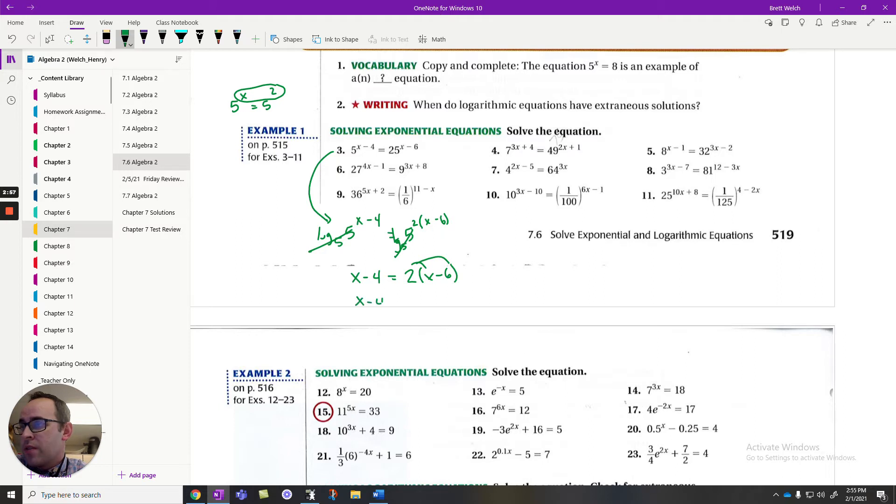A log base 5 will cancel the 5s with the exponential, leaving me with x minus 4 equals 2 times x minus 6, which is a pretty easy problem to solve. If x minus 4 equals 2x minus 12, if I minus an x and I add 12, I get x on the right equals 8. We have a solution. The catch to doing these, though, is that you have to write them using the same base.